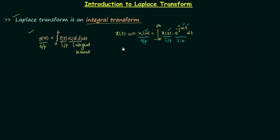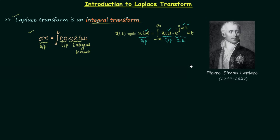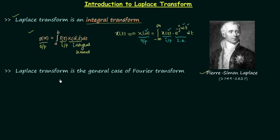The Laplace transform is also having the same form. I will give you the Laplace transform after some time, but first we will know about its discoverer. Laplace transform is named after its discoverer Pierre-Simon Laplace — he was a French mathematician and an astronomer. Laplace transform is similar to the Fourier transform, or more precisely we can say that Laplace transform is the general case of Fourier transform.